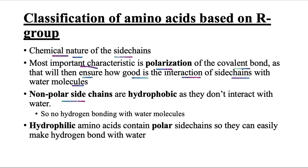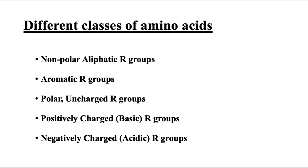The non-polar side chains are hydrophobic as they do not interact with water, meaning there is no hydrogen bonding with water molecules. The hydrophilic amino acids contain polar side chains, so they can easily form hydrogen bonds with water. Based on the characteristics of the R group, amino acids can be classified into different groups.